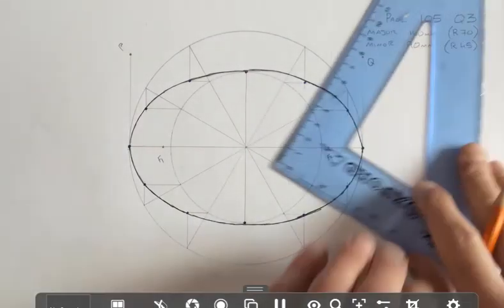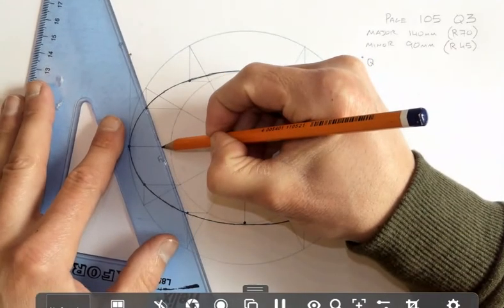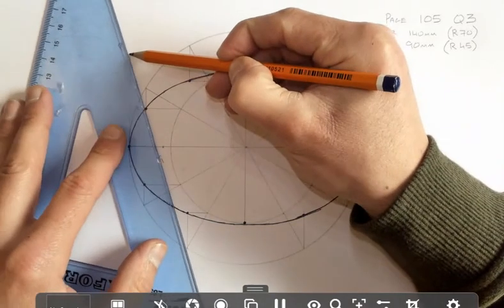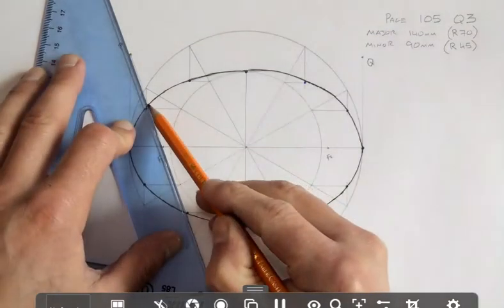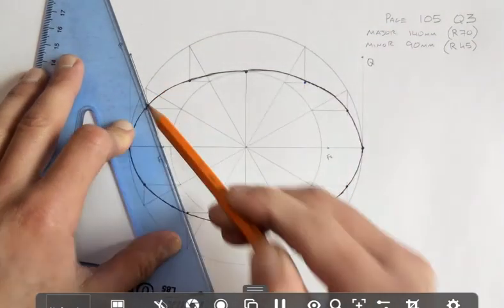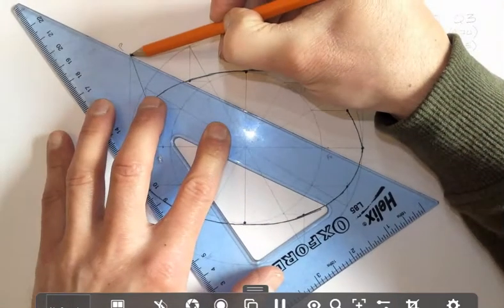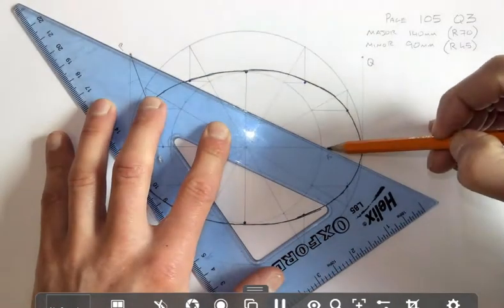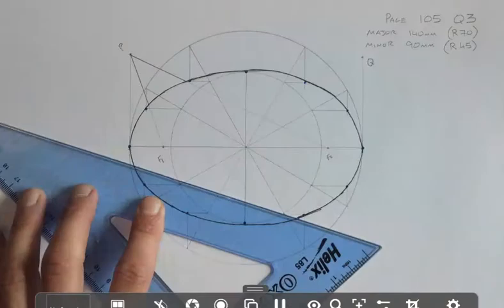To draw the ears then, I'll use construction lines. Join P to F1. And there's a dark section to where it hits the ellipse. Join P to F2. And the dark section is to where it hits the ellipse.